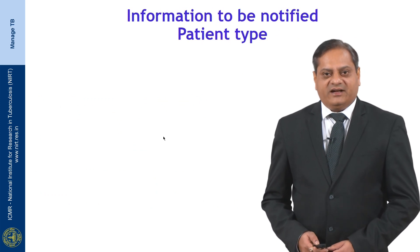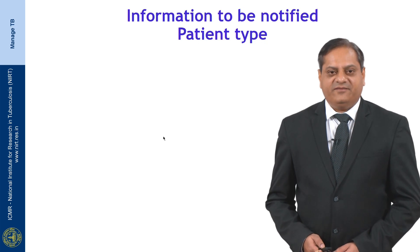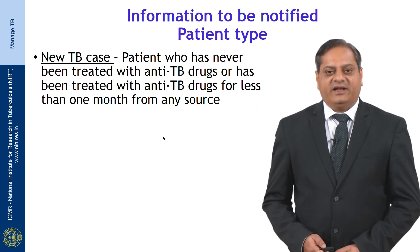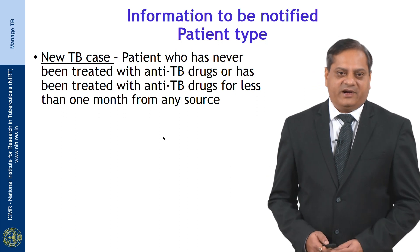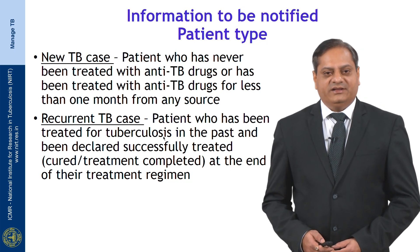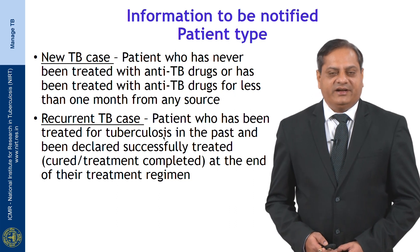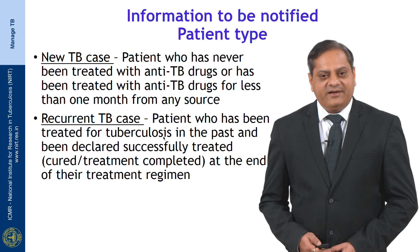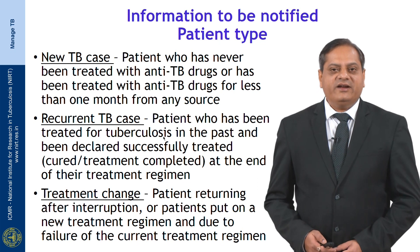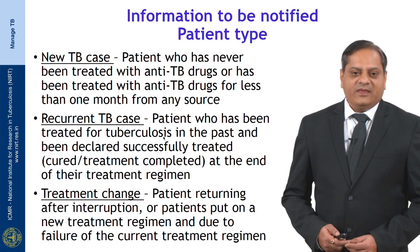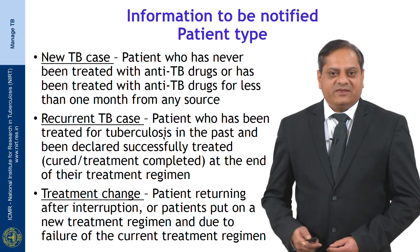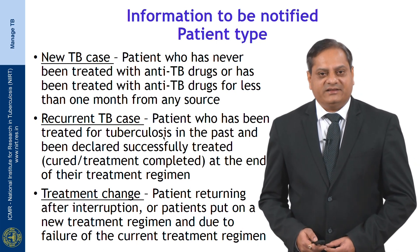There are three types of patients included in the notification. First, a new TB case — a patient who has never been treated with anti-TB drugs or has been treated for less than one month from any source, public or private. Second, a recurrent case — a patient treated for tuberculosis in the past and declared successfully treated, including cured patients and those who completed treatment. Third, treatment change — patients returning after interruption or put on a new treatment regimen due to failure of the current regimen. These are the types of patients the treating facility must notify.